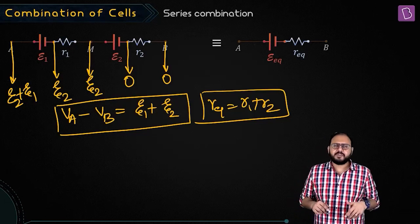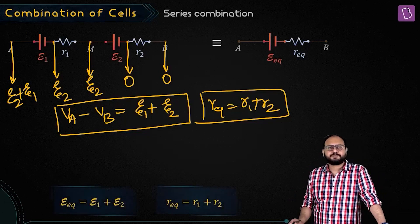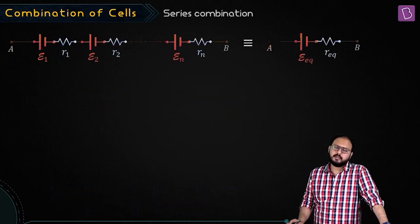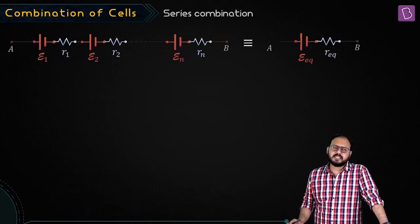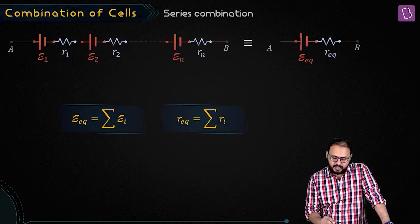Now, this definition for series was fairly simple. So the result is, here we go. Can I generalize that? Of course you can generalize. If you have N such cells in series, then E equivalent will be sigma Ei and r equivalent will be sigma ri.